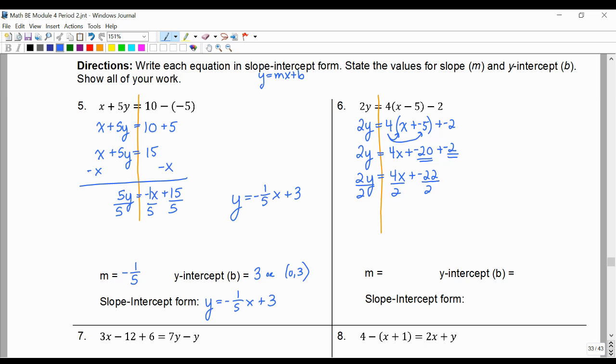This time, we don't need to move anything. And we get y equals 4 divided by 2 is 2x, and negative 22 divided by 2 is negative 11.